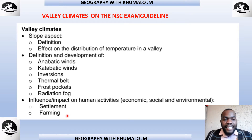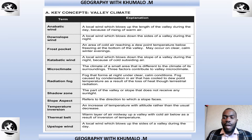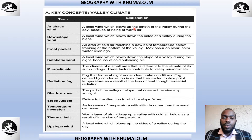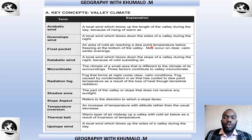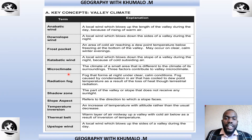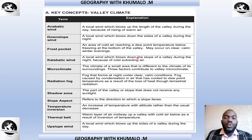Here are some definitions you need to know. Anabatic winds are a local wind which blows up the valley slope during the day because of rising air. Catabatic winds are a local wind which blows down the valley sides during the night. Frost pocket refers to an area of cold air reaching a dew point temperature below freezing at the bottom of the valley — this may occur on clear, calm winter evenings or winter nights.